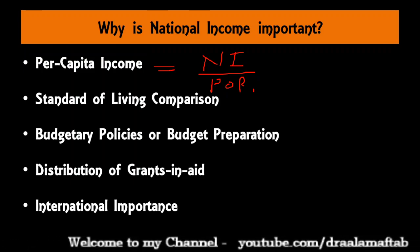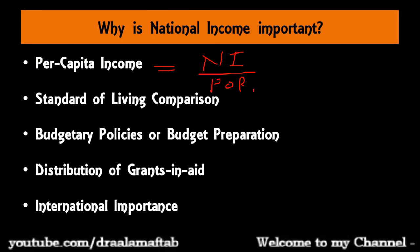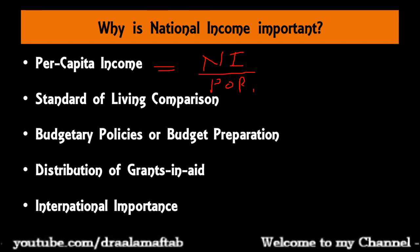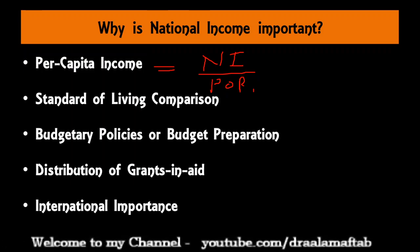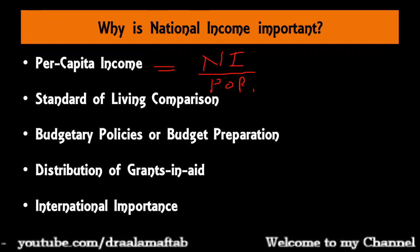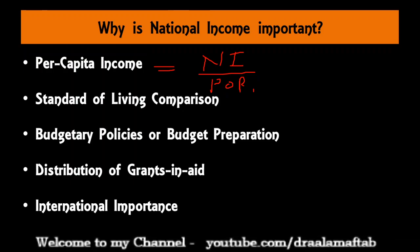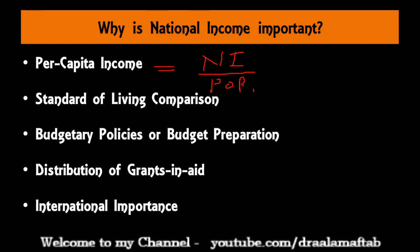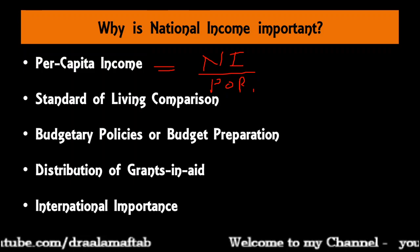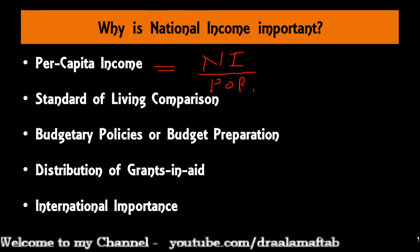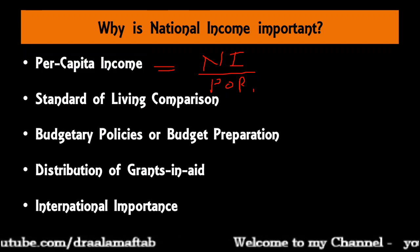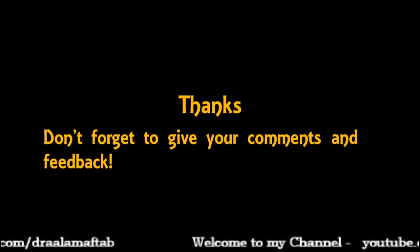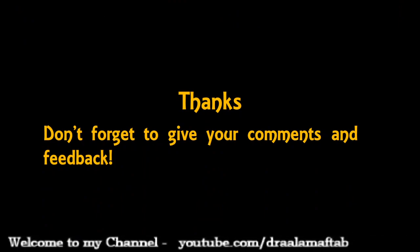So national income is very important for the development of the country. To summarize: national income data helps in the measurement of the size of the economy and the level of economic performance, and it helps trace the trend or speed of economic growth relative to previous years or other countries. It also helps to know the composition and structure of national income across various sectors and their variations, and to make projections about future development trends so that governments can formulate suitable development plans and policies to increase economic growth. Thank you. Please do give your comments and feedback.